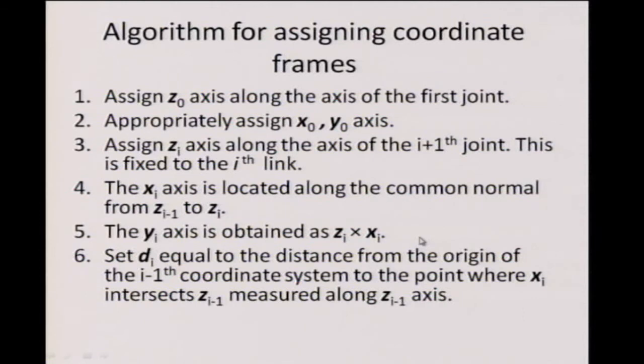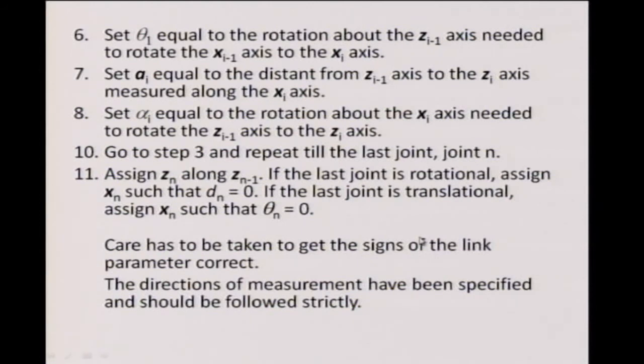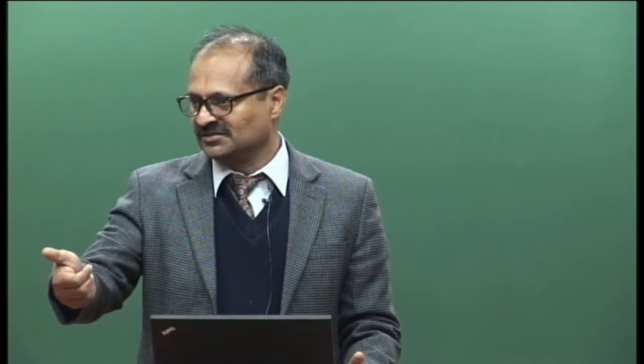This last part is important because the z axis could have been assigned in two different directions. Once you have assigned a direction for the z axis, you must use that and measure d_i along that direction — otherwise the mathematics will not be consistent. Similarly, theta_i is the rotation about the z_{i-1} axis. Rotation about an axis: put your thumb along the direction of the axis, and if the rotation is in the same sense as the curl of your right-hand fingers, take it as positive; otherwise negative.